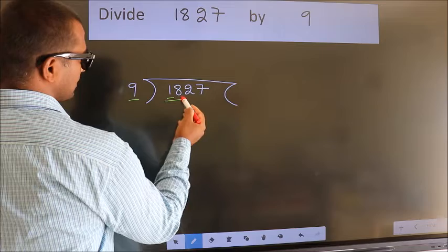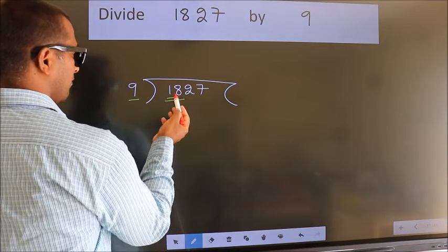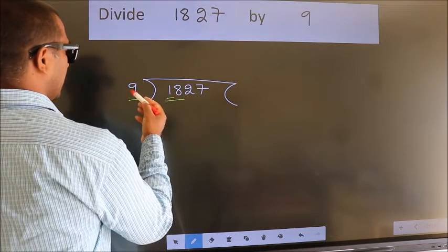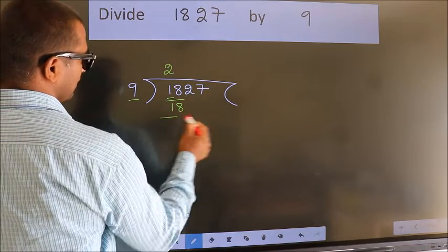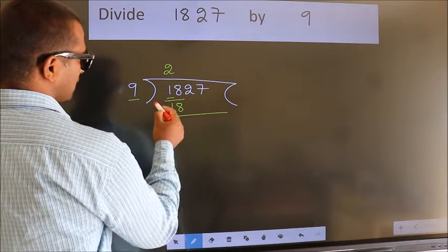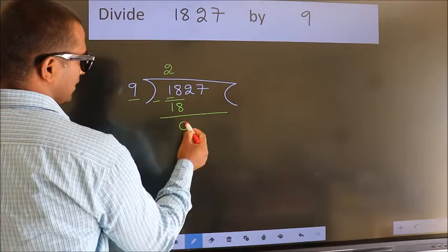So we should take two numbers, 18. When do we get 18? In the 9 table. 9 twos, 18. Now we should subtract. We get 0.